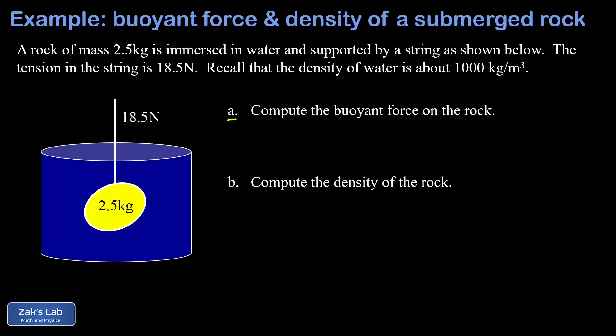We're going to start in part a by just getting the size of the buoyant force on the rock. We do that with a vertical force analysis. We've got three forces acting vertically on this rock.